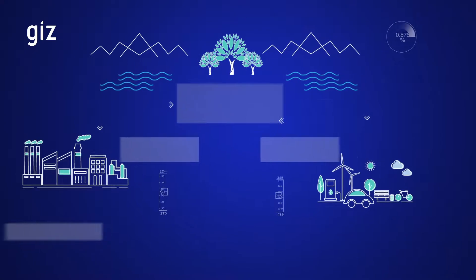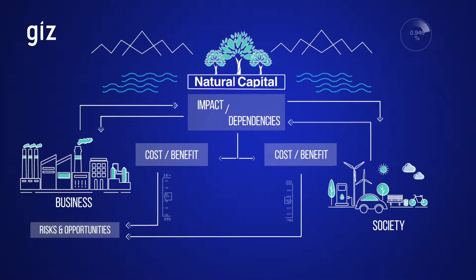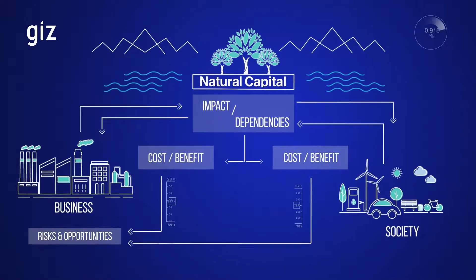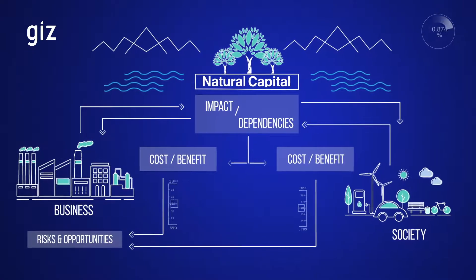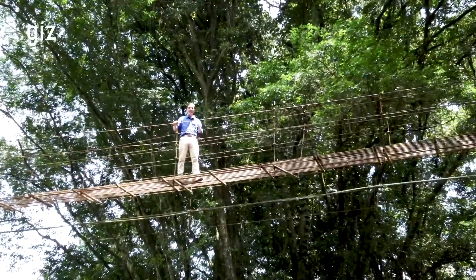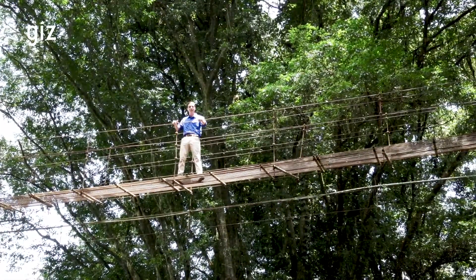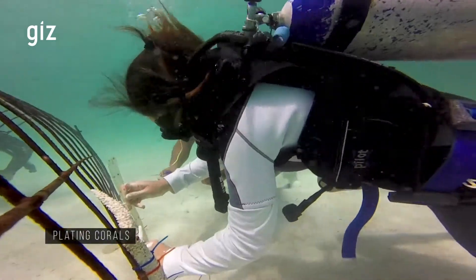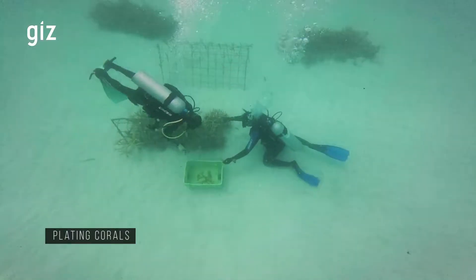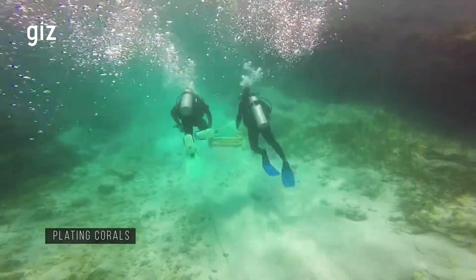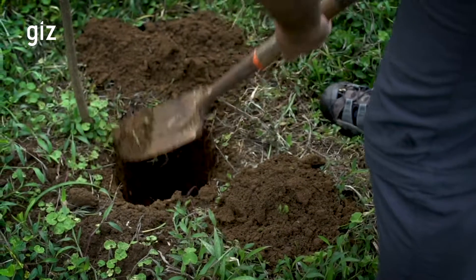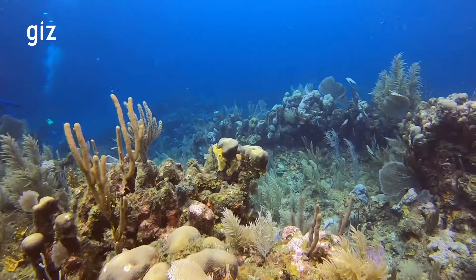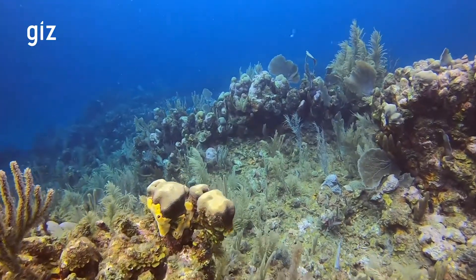The private sector's long-term survival depends on ecosystem conservation. The key questions are: how much does my business model depend on natural capital, and how are my actions impacting the ecosystem's ability to provide the resources on which I depend? What would happen if my natural capital ran out?